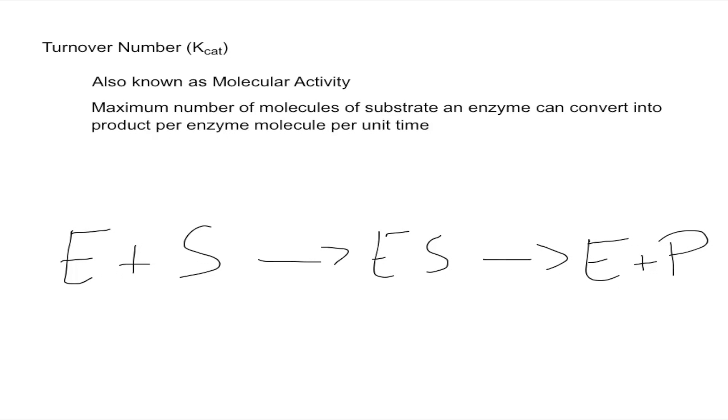It's the maximum number of molecules of substrate an enzyme can convert into product per enzyme molecule per unit time. It really helps looking at how the reaction goes, what the steps are, to understand this definition.